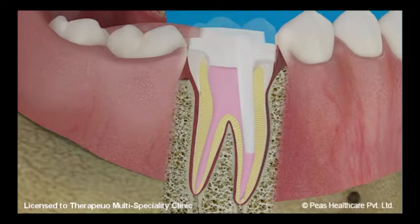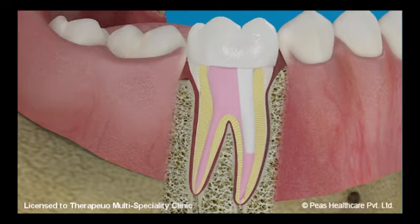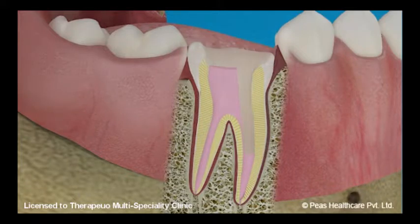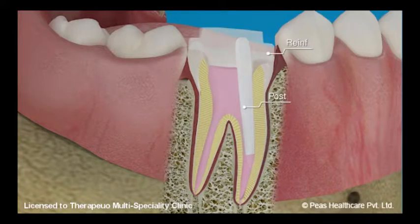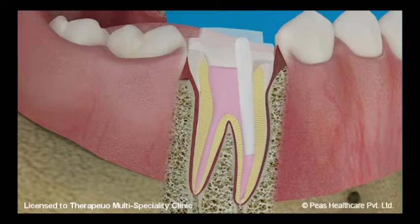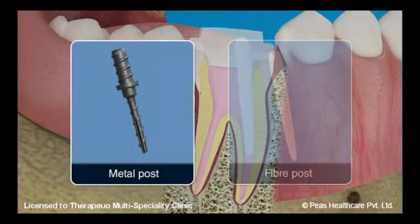A post and core connects the root canal treated tooth to a crown. As the name suggests, this procedure involves two parts: placement of the post, and then the reinforcement using a core material to build up a core. There are two basic types of posts available — metal and fiber.